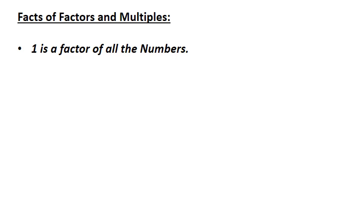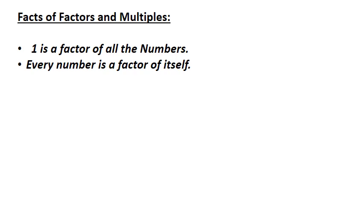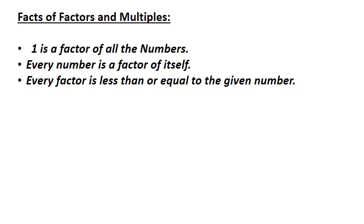Now let us learn a few facts about factors and multiples. First fact: 1 is a factor of all numbers, because 1 is an exact divisor of all numbers. Second fact: every number is a factor of itself, meaning each number can divide itself without leaving a remainder. For example, 12 is a factor of itself since 12 ÷ 12 leaves no remainder.